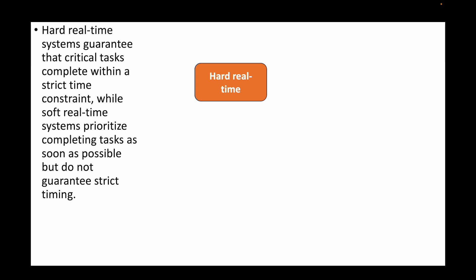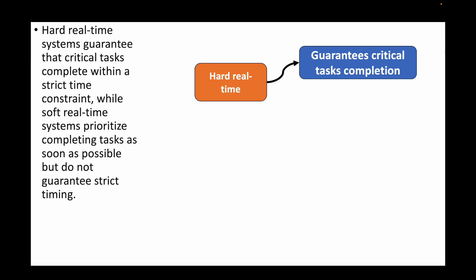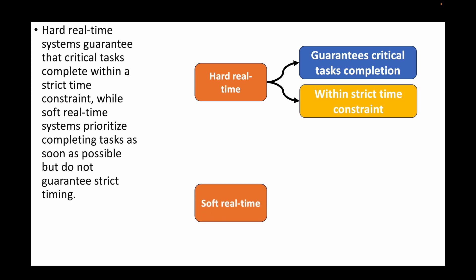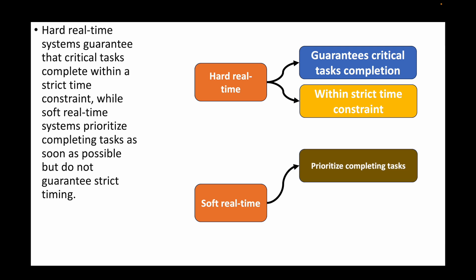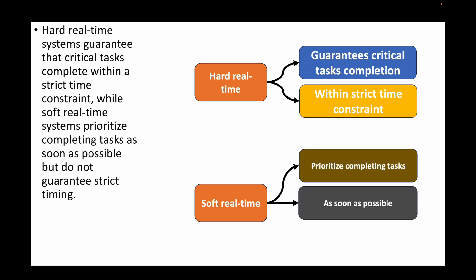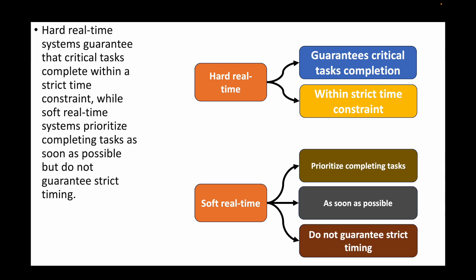The next question is: what is the difference between hard and soft real-time systems in Linux? A hard real-time system guarantees that a critical task completes within a strict time constraint. Soft real-time, on the other hand, prioritizes completing tasks as soon as possible but does not guarantee strict timing — whereas hard real-time strictly enforces timing and ensures the task completes within the deadline.